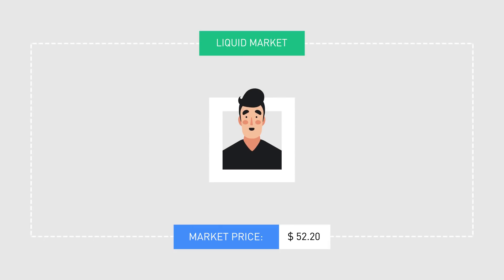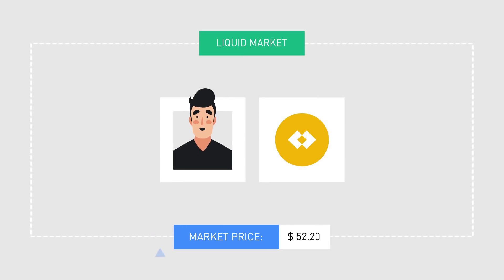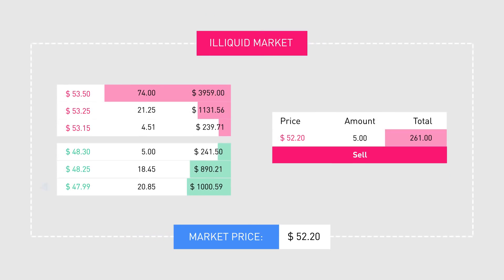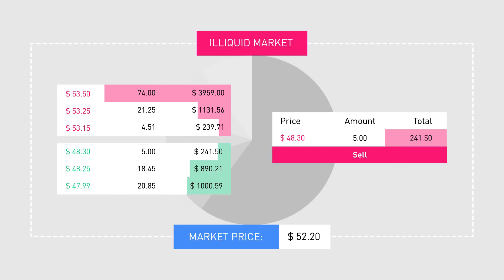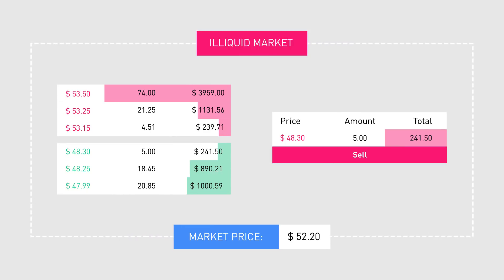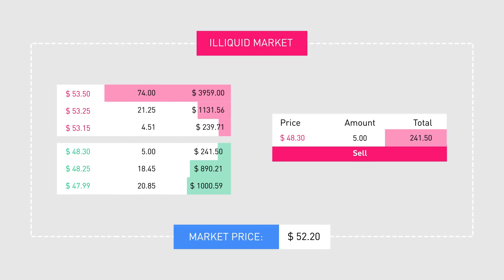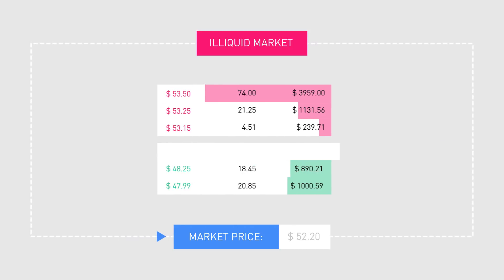However, if Bob is asking to sell his five tokens at the current market price and the market is illiquid or has low liquidity, meaning that there are not enough buyers willing to pay the price Bob is asking, he is required to lower his asking price or wait for the market to become more liquid to be able to sell his tokens. If Bob decides to sell at a lower price, his trade is also affecting the current market price of the token.